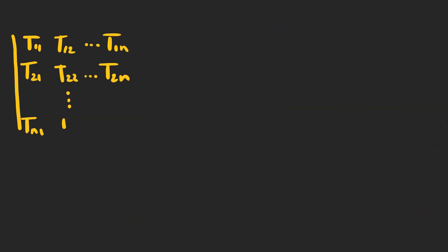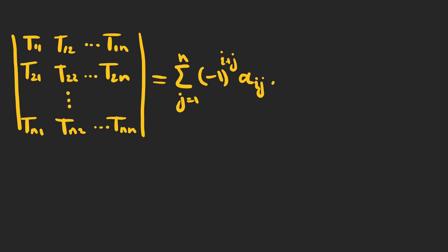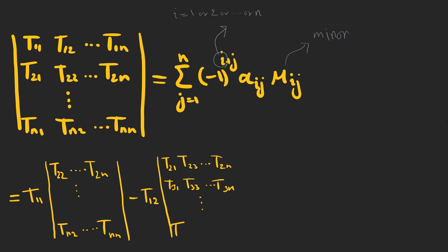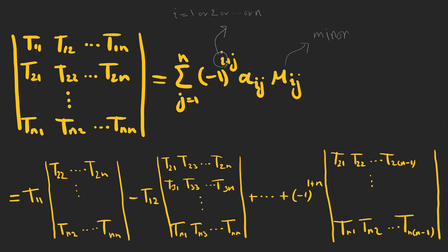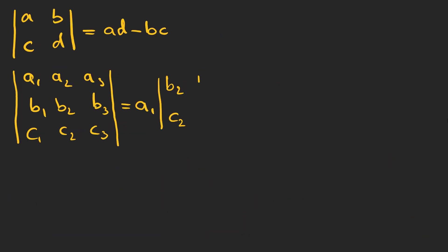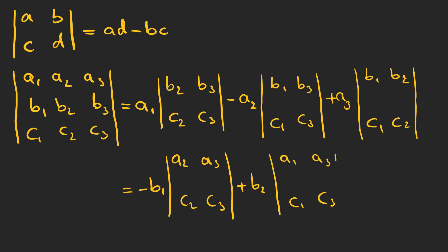To find the determinant of small matrices, we can use the Laplace expansion. For larger determinants, it's better to use Gaussian elimination. In this formula, M_ij is the minor — the determinant of the submatrix with the i-th row and j-th column removed — and i can be any row. To calculate the determinant this way, we need lower-rank determinants. For two and three dimensions, it can be written explicitly.